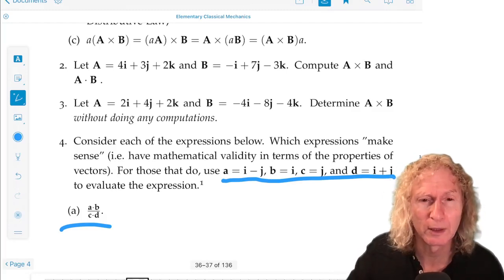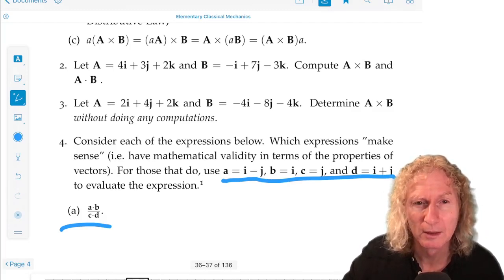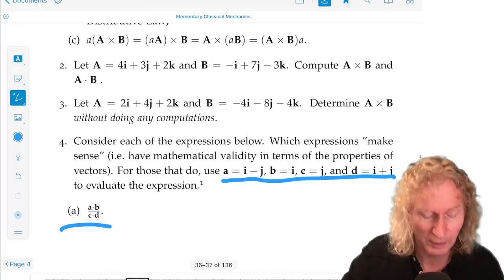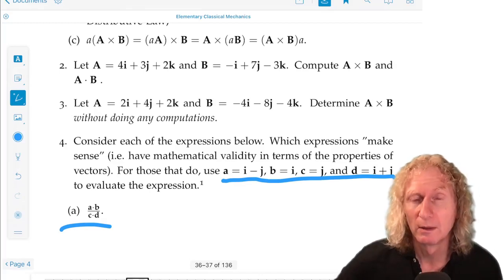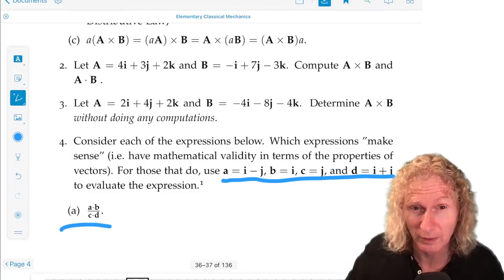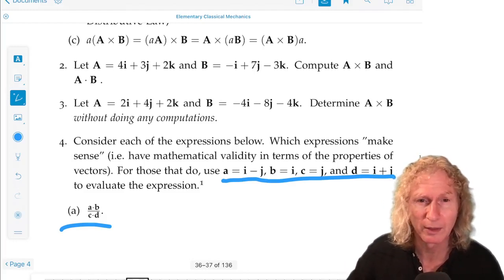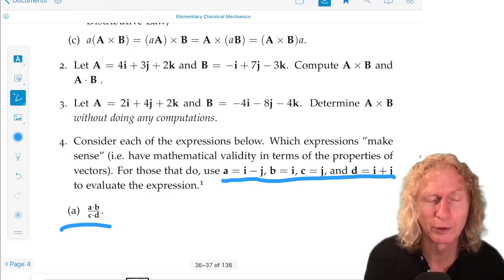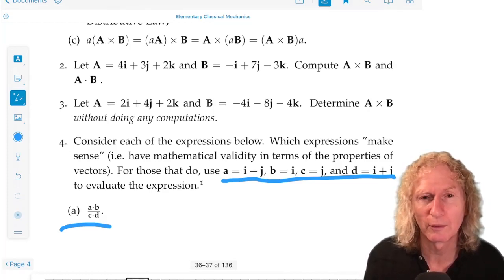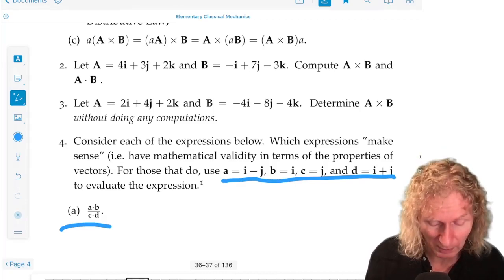So the first one clearly does, because A dot B is a scalar, and it's divided by c dot d, which is a scalar. So you can divide one scalar by the other, unless c dot d happens to be 0. But you should be able to look at the vector and see that's not the case, necessarily.